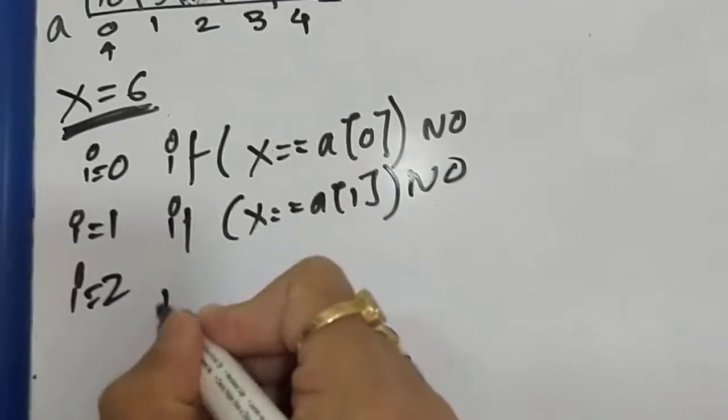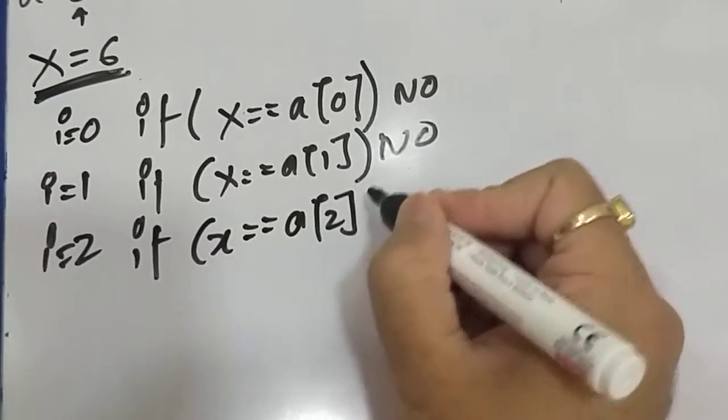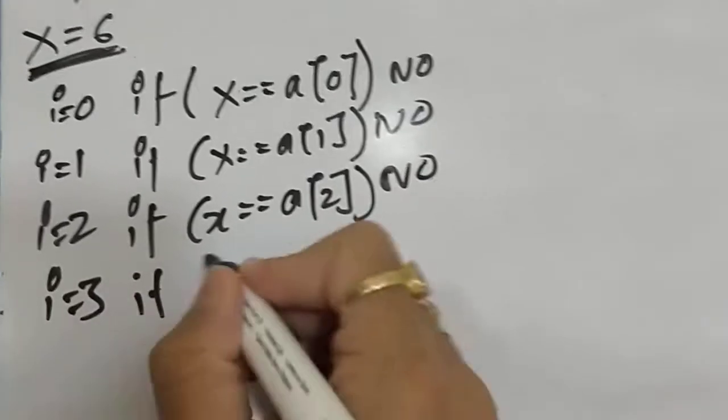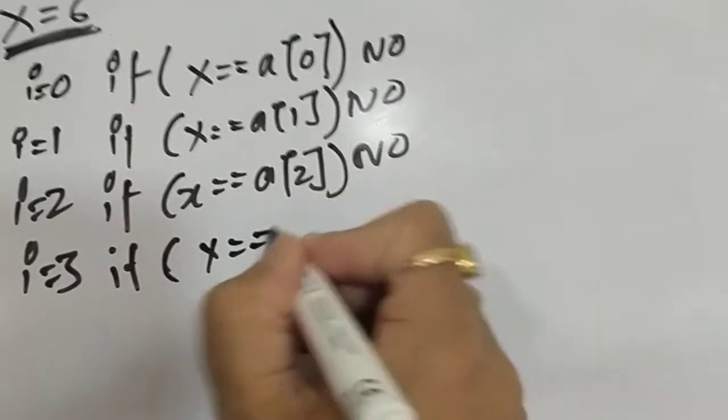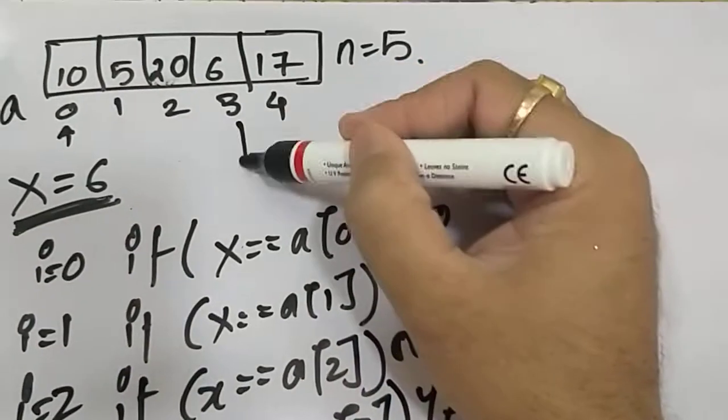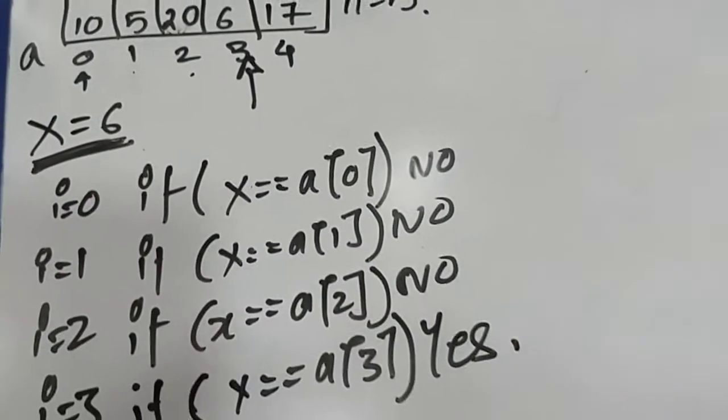Then i is 2. If x equals a[2]? No. i is 3. If x equals a[3]? Yes! At the third position it is equal. At positions 0, 1, 2 they were not equal, but the moment x becomes equal to a[3], we break.